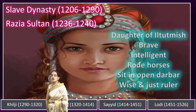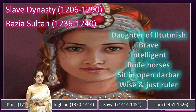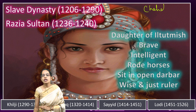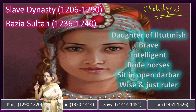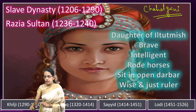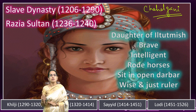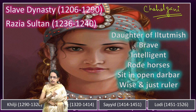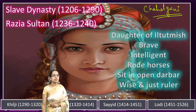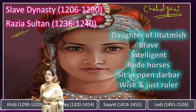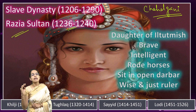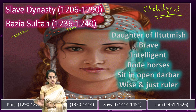Soon after him, there was a group of 40 Turks known as the Chahalgani, who were of the view that a son of Iltutmish should rise to power. However, none of Iltutmish's sons was able, and one son, Ruknuddin Firoz, was brought to the throne but was unworthy. The Chahalgani then agreed to choose Razia Sultan as the real ruler. Razia remained in power for four years. She was the daughter of Iltutmish and was a brave, intelligent, benevolent, wise, and just ruler. She rode horses and sat in open darbars.